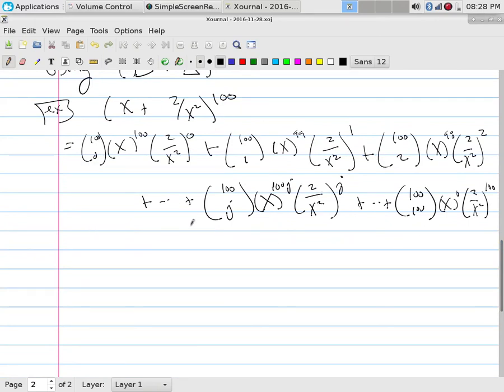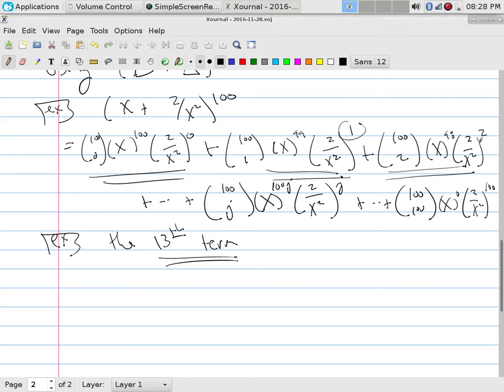Another is to kind of go through here and say could you figure out a particular, like if I asked for the 13th term. Well, the first term, the very first term has a 0, the second term has a 1, the third term has a 2, so that would tell me that the 13th term is going to be x and 2 over x squared, this would be to the 12th term.